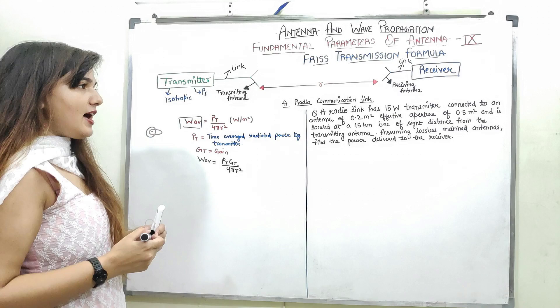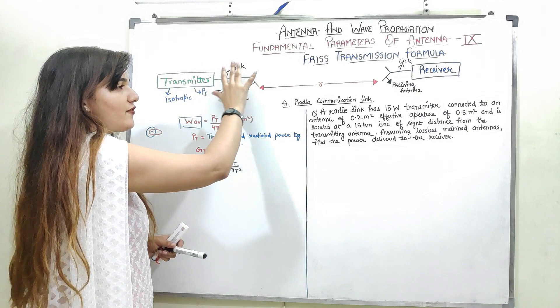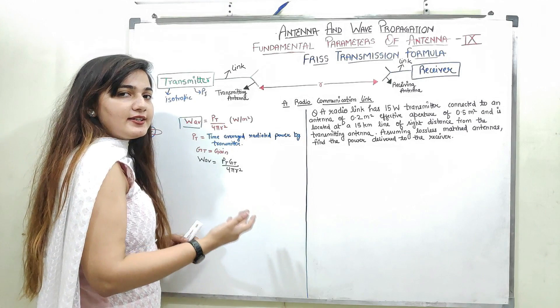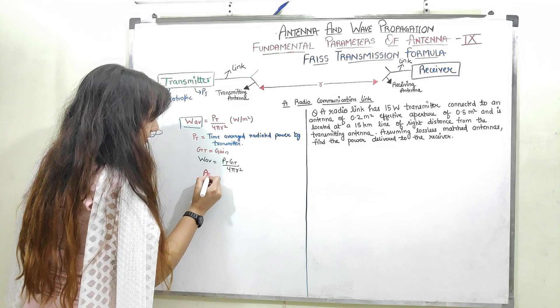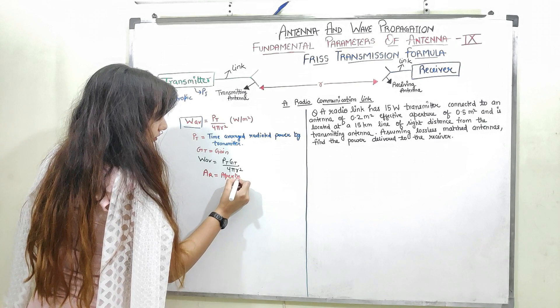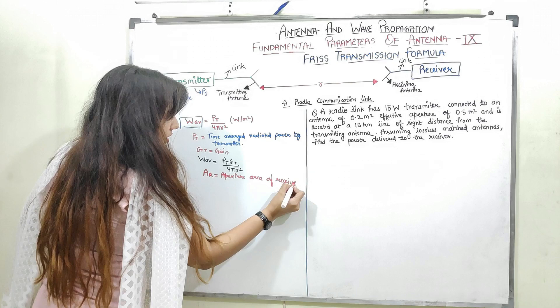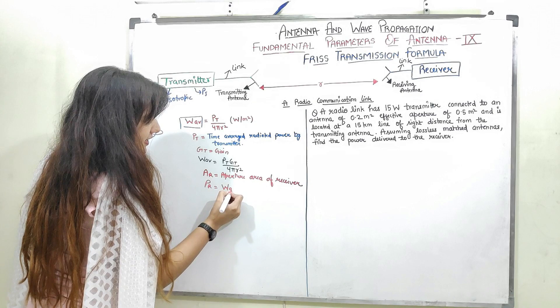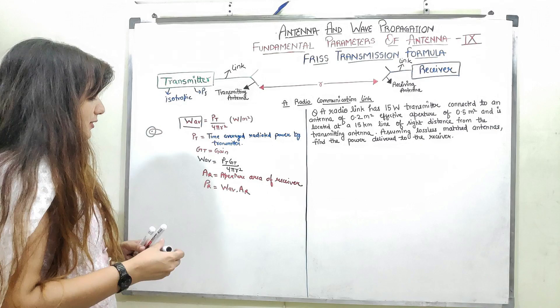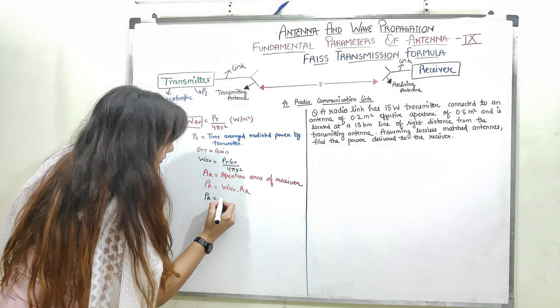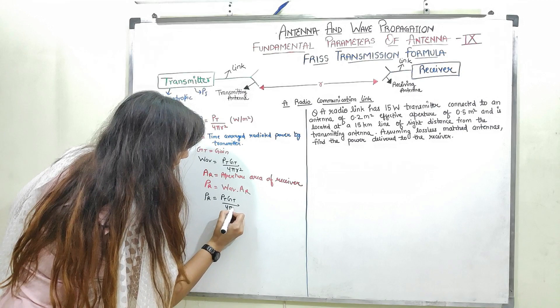So what is happening? I have the transmitter which is a directional transmitter, and it is providing some power to the receiver. Now I know the average power density. At the receiving side, the power received by the receiver is directly proportional to the aperture area of the receiver. If AR represents my aperture area of the receiver, then the power at the receiver would be the average power density multiplied by AR. So PR = (PtGt / 4πR²) × AR.